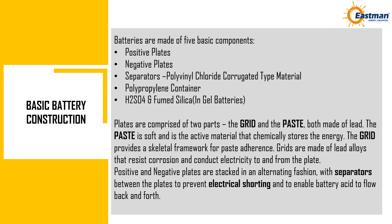Basic battery construction. Batteries are made of five basic components: positive plates, negative plates, separators of polyvinyl chloride corrugated type material, a polypropylene container, and sulfuric acid with fumed silica in gel batteries. Plates are comprised of two parts — the grid and the paste — both made of lead. The paste is soft and is the active material that chemically stores the energy. The grid provides a skeletal framework for paste adherence. Grids are made of lead alloys that resist corrosion and conduct electricity to and from the plate.